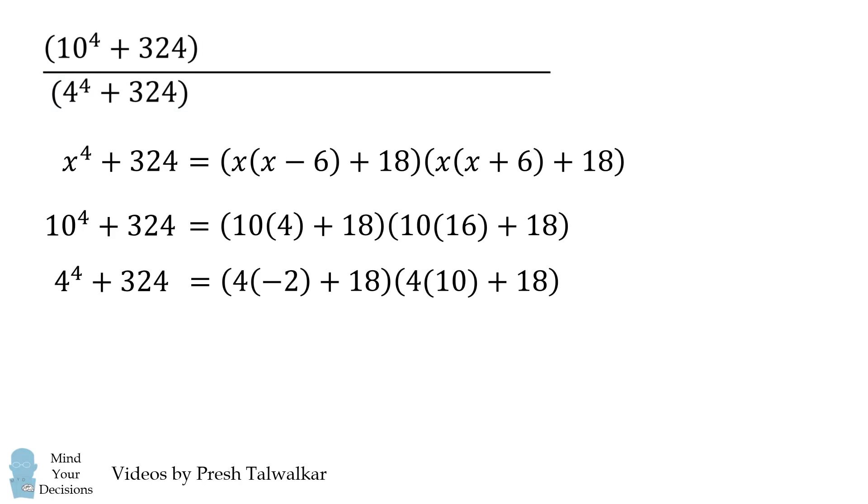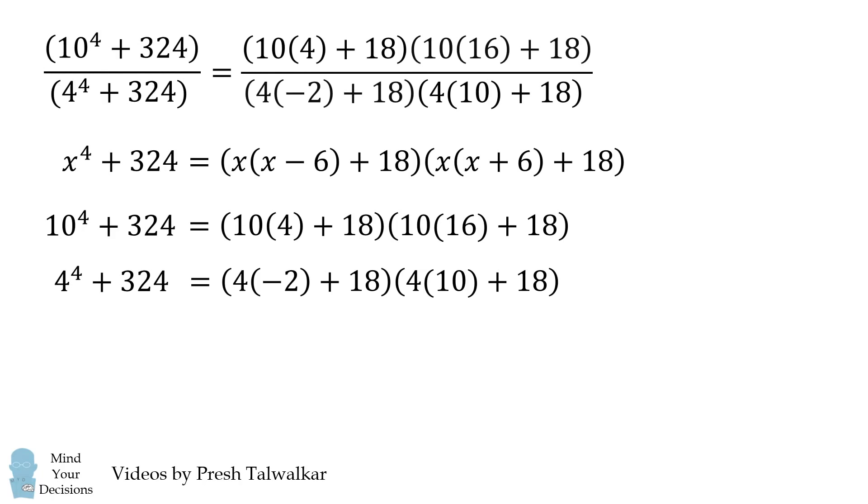So let's imagine we're just evaluating this fraction. We simplified the numerator and the denominator, and now here's the trick. The first term in the numerator cancels out with the second term in the denominator. So we have this fraction simplify to be just the following fraction. This is going to be a little bit easier to evaluate.